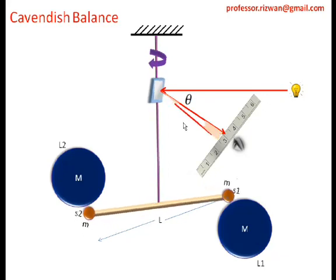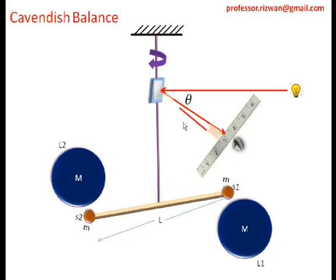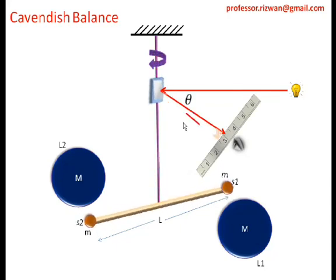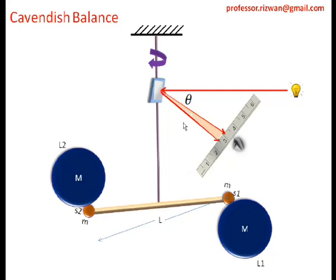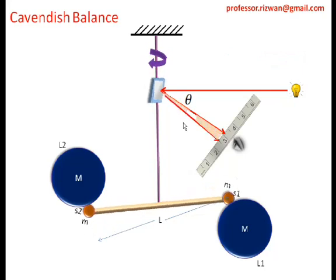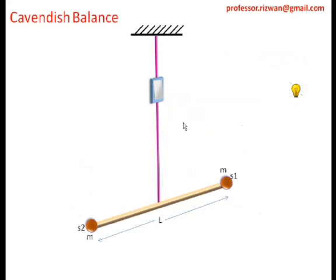The two small masses get attracted towards the big spheres. Since the spheres are connected to the rod, the rod also rotates. The rod is connected to the wire, so the metallic fiber wire also gets twisted. The mirror attached to the fiber wire rotates through a certain angle theta, which can be measured by observing the image of the bulb in the mirror using a scale. This value of theta is very useful for calculating the gravitational constant G.